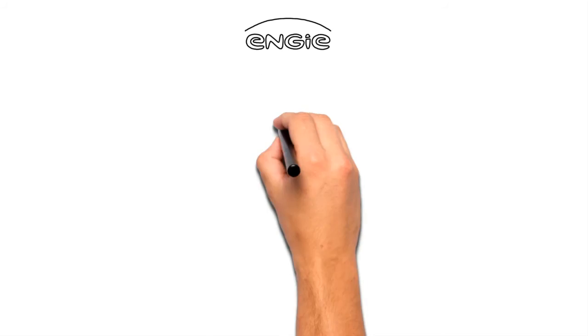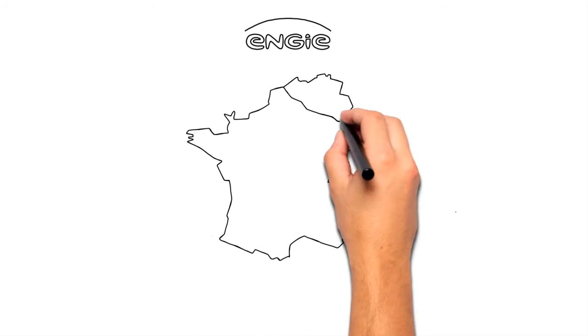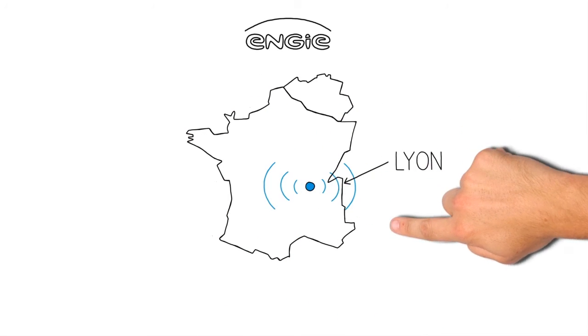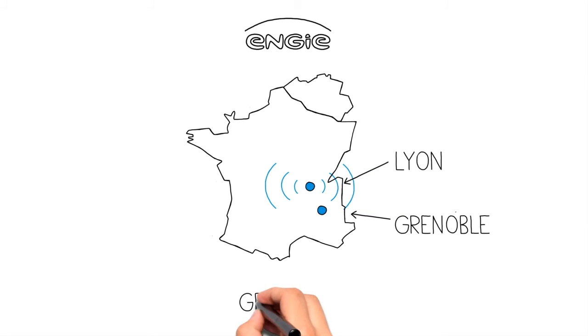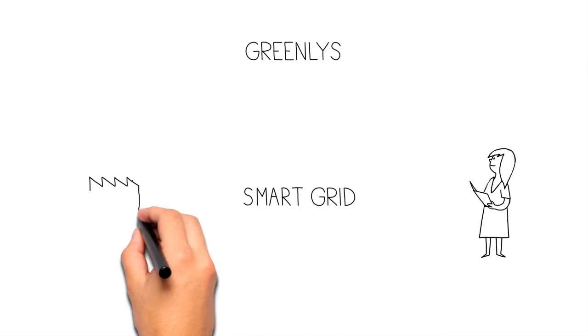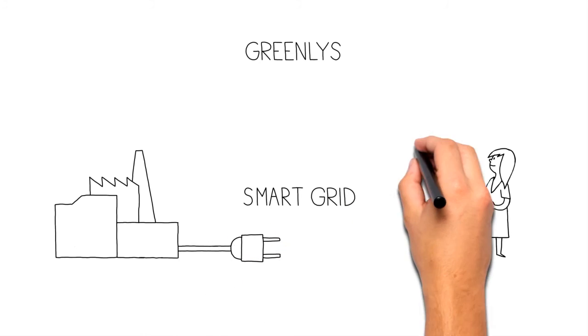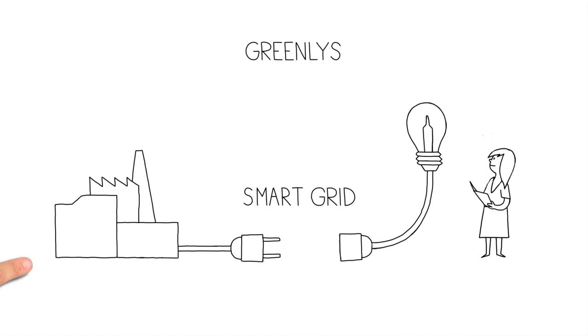Trials are being carried out by Engie in Belgium and France. For example, in Lyon and Grenoble, there's the Green Lease Project, the first smart grid project to test the overall operation of a smart electricity system from the producer to the end user.